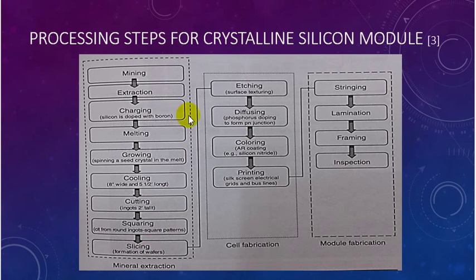For cell fabrication, the steps are etching, diffusing, coloring, and printing. For the module fabrication, the steps are stringing, lamination, framing, and inspection.